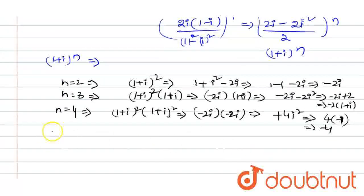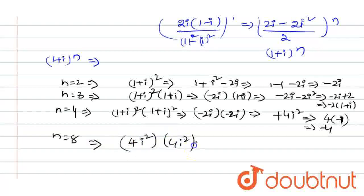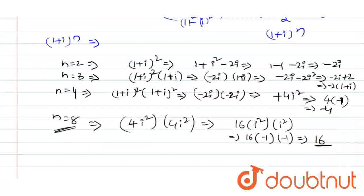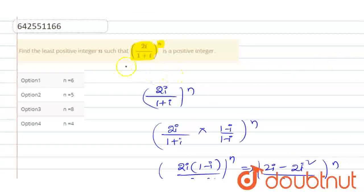So if we take n=8: (1+i)⁸ = ((1+i)⁴)² = (-4i²)² = 16 × (i²×i²) = 16 × (-1)×(-1) = 16. We get the value 16, which is positive. So the least positive integer is n = 8. That's it, thank you.